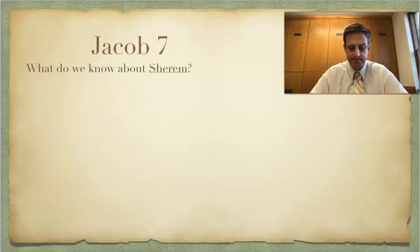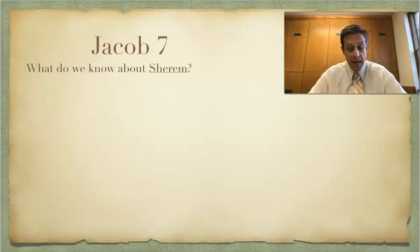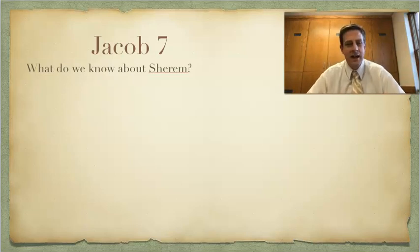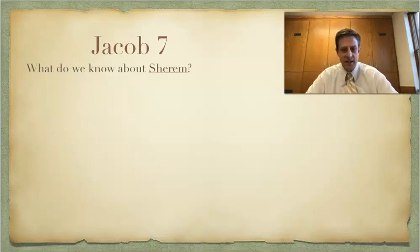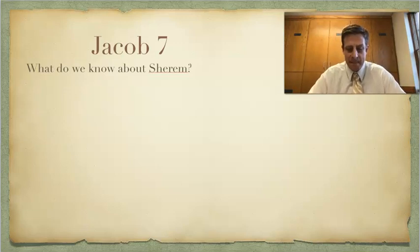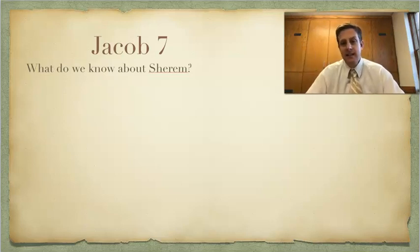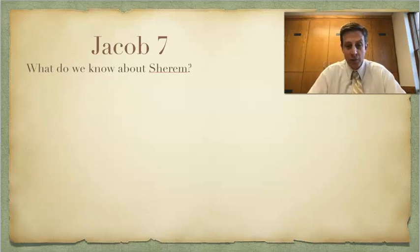Going to verse 6: 'And it came to pass that he came unto me, and on this wise he did speak unto me, saying, Brother Jacob, I have sought much opportunity that I might speak unto you. For I have heard, and also know, that thou goest about much.' In other words, he's heard that Jacob's the leader. An insider of the Nephites would know that, but to me he seems like an outsider — 'I'm hearing that you're the man in charge, you're the one who's preaching all of this.' So he goes specifically to Jacob and wants to attack and fight. They go back and forth for a little bit, and basically what it comes down to is Sherem wants a sign.